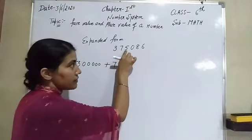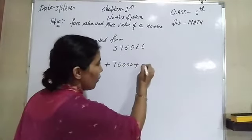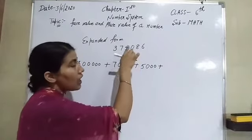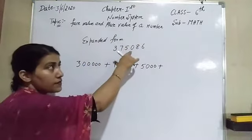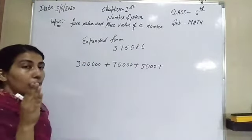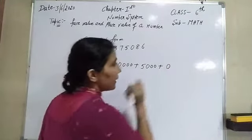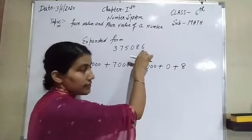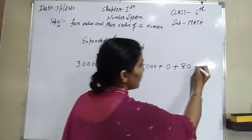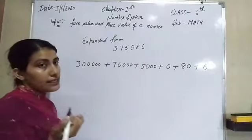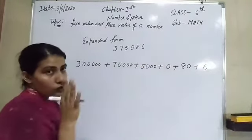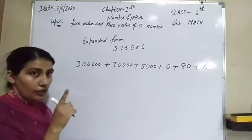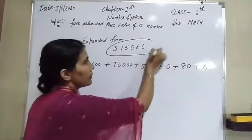After 7 is 5 with three digits after it — write three zeros to get 5,000. Then comes zero: the face value and place value of zero always remains zero, so just write 0. Then 8 has one digit after it — write one zero to get 80. Finally 6 is at the last position, so its place value equals its face value: 6. The expanded form is 300,000 + 70,000 + 5,000 + 0 + 80 + 6. To check, add all these numbers and you get back the original number.